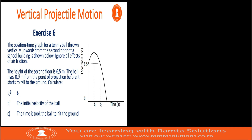Hello guys, welcome to Ramta Solutions. Today we continue with vertical projectile motion, and we're looking at example six. This example says the position-time graph for a tennis ball thrown vertically upwards from the second floor of a school building is shown on the right. Ignore all effects of air friction.